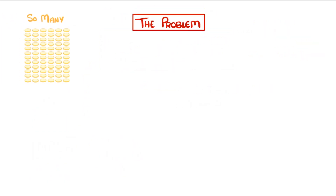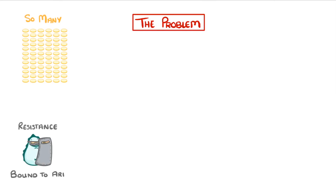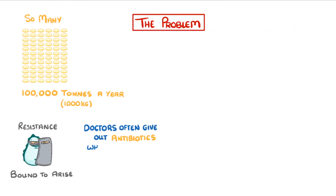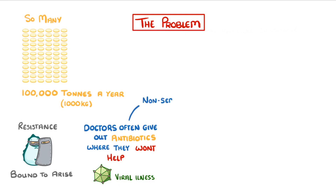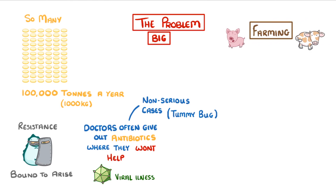The problem is that we use so many antibiotics that resistance is bound to arise. It's estimated that we use around 100,000 tonnes of antibiotics each year — and because each tonne is 1,000 kilos, that's a lot of antibiotics. One reason we use so many is that doctors often give out antibiotics in cases where they won't actually help, such as when somebody has a viral illness which antibiotics can't kill, or in non-serious cases such as tummy bugs that will generally clear by themselves in a few days anyway.